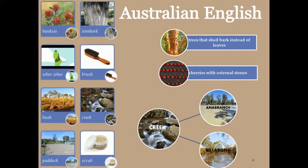During colonial times, the new settlers had to find names for a fauna and flora — for example, banksia, ironbark, and wee-wee — different from anything previously known to them, including trees that shed bark instead of leaves and cherries with external stones.